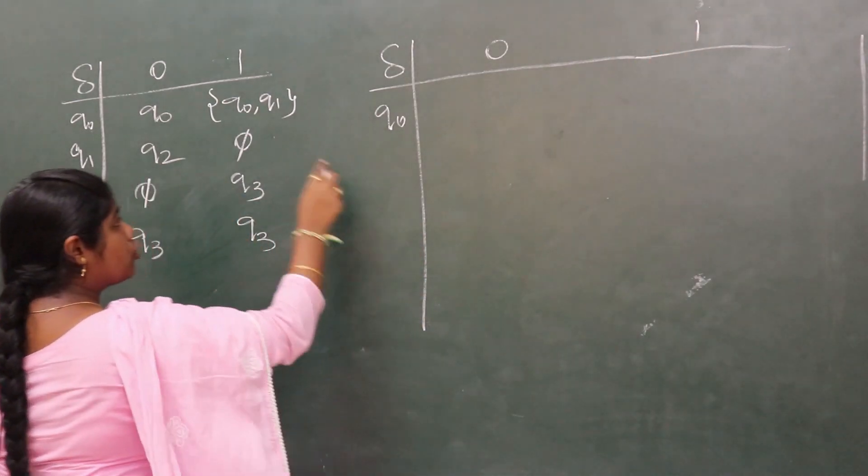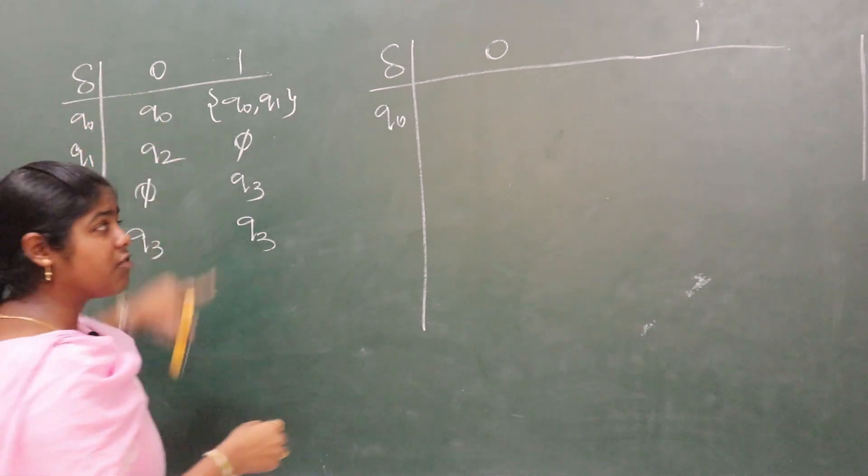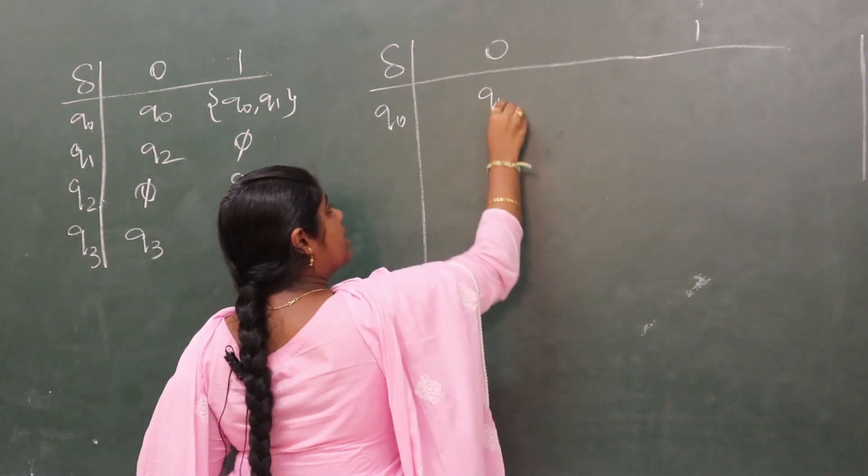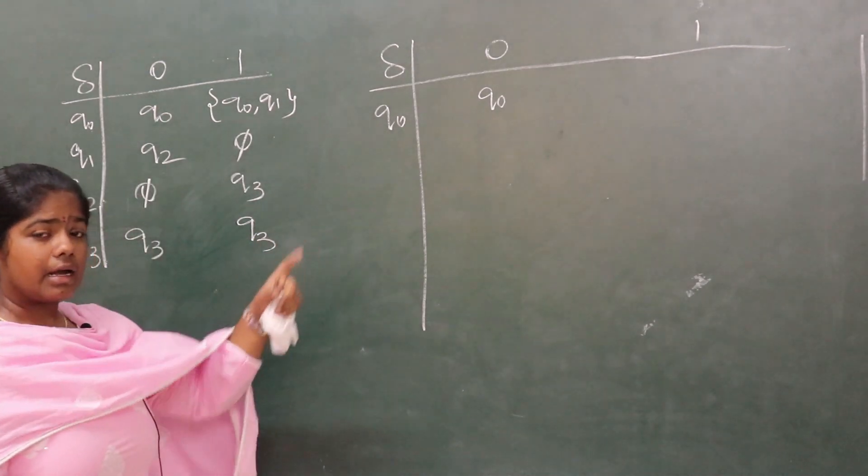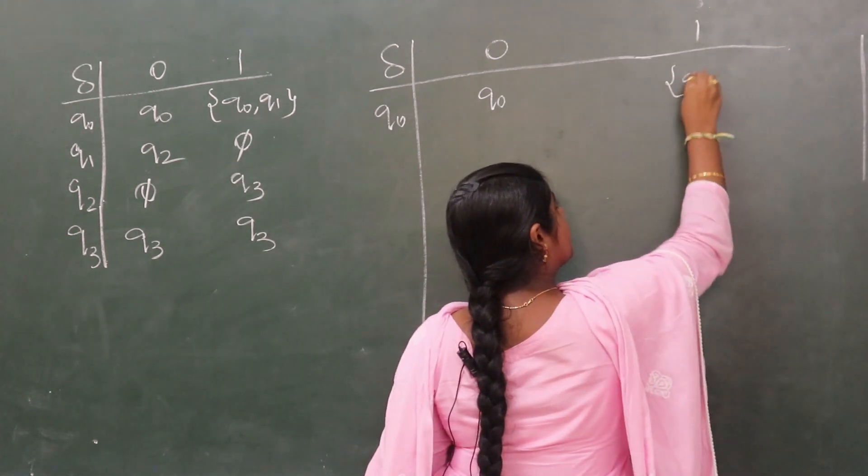Whether DFA or NFA, the input alphabet sets are the same, therefore the input alphabet sets are 0, 1. Now for the state q0, q0 on 0 transition goes to q0. Let the same be written here. Similarly, q0 on 1 goes to q0 and q1. The same is repeated here.